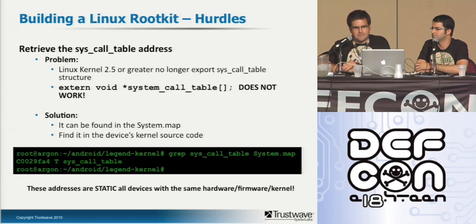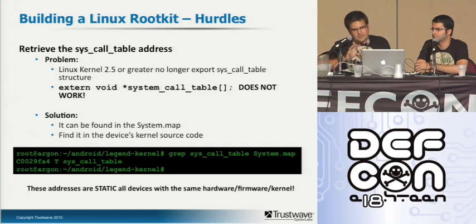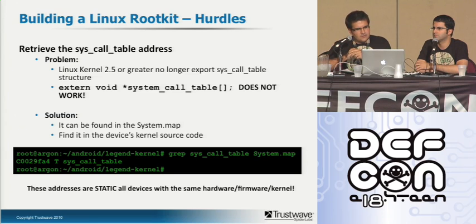In kernels greater than 2.5, there is a memory address called the system call table structure which is no longer exported. They did that for security reasons, because in kernels 2.4 and below this was exported by the kernel, allowing lots of rootkits to use this to get the address of the syscall table and hijack system calls. Recently, around 2006, there was a Phrack article by a guy called SD and another called SEvic, called how to obtain syscall addresses.